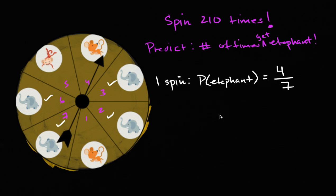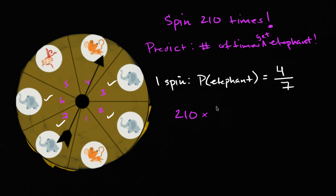So one reasonable thing to do — and this is actually what I would do — is: a four-sevenths probability means I should expect that four-sevenths of the time, especially if I'm doing a lot of these, it's a reasonable expectation that four-sevenths of the time I will get an elephant. I've calculated the theoretical probability based on this being a fair spinner, and that should inform that if I were to do a bunch of experiments, four-sevenths of the time I should see me getting the elephant. So it's a reasonable prediction that spinning 210 times, I would expect four-sevenths of those 210 times to get an elephant.